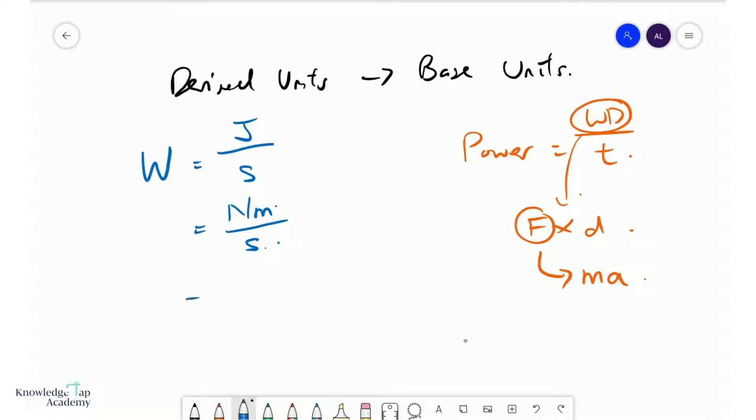And therefore, Newton can be expressed as the unit of mass, kilogram, times the unit of acceleration, which is meters per second squared. And of course, we still have another M here and then another S down here.